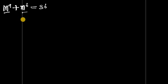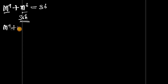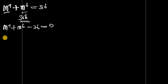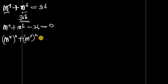Share this to your friends and encourage everyone to watch the video. Now, let's recall the problem: m power 9 plus m power 6 minus 36 equals to zero. What do I do next? I can decide to write it as m power 3 to the power 3, plus m power 3 to the power 2, minus 36 equals to zero.